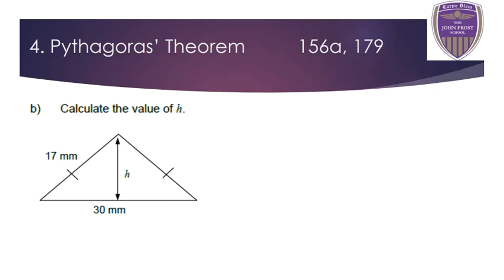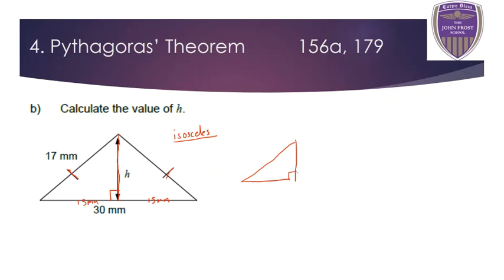Part B. Again, we've got an isosceles triangle — two equal sides marked on the diagram. An isosceles triangle has two equal sides and two equal angles, and it has a line of symmetry down the middle, so I can cut it in half to give two equal triangles. At the cut, I've got a right angle because the horizontal and vertical lines are perpendicular. This also splits the base of 30 millimetres into 15 millimetres on each side.